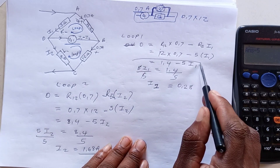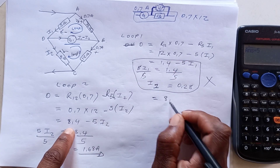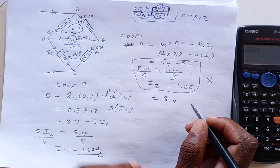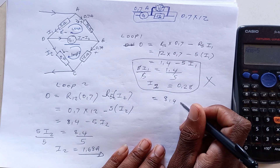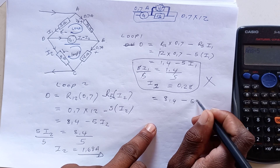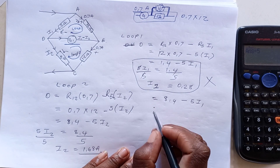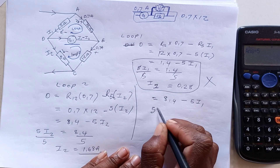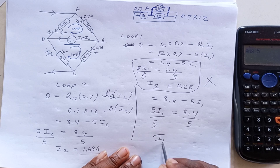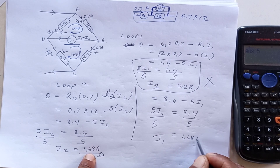So let us cancel that earlier step and continue with the corrected values. 12 times 0.7 we know is 8.4. Thanks to these common resistances given here — I make mistakes, forgive me. So we would then have minus 5·I1. We take I1 to this side, the sign changes, and we divide both sides by 5. The values are the same, so I1 is also 1.68 A.